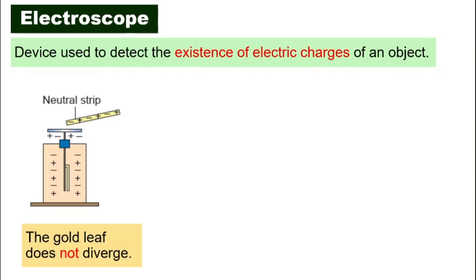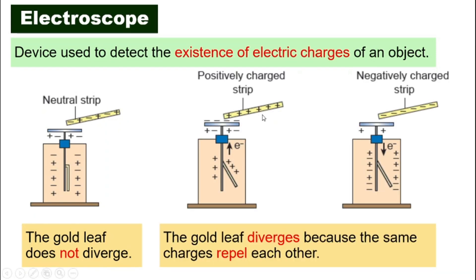The electroscope looks something like this. If we bring a neutral object near the electroscope, nothing happens — the gold leaf at the bottom part does not move. However, if you bring a positively charged or negatively charged object near the electroscope, the gold leaf at the bottom diverges — meaning they open.